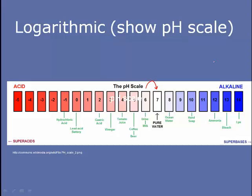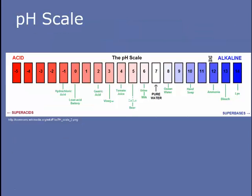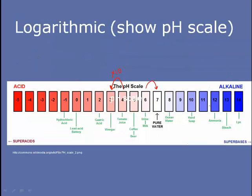For example, if we start at pH 4 and we go to pH 3, we actually have 10 times more hydrogen ions than we did at pH 4. If we then go from pH 3 to pH 2, that also means we have 10 times more hydrogen ions than we did at pH 3. From pH 4 to pH 2 is actually a change of 100 times the number of hydrogen ions.